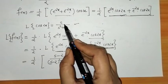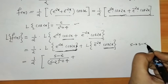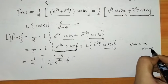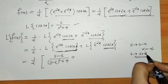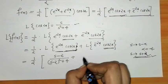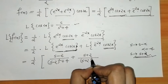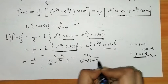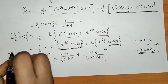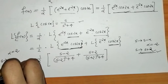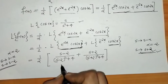For the second term with cos(2x), we replace s by s minus α where α equals minus 2, so we get s plus 2. This gives us (s+2) divided by (s+2)² plus 4. So the first term used α equals 2 with s replaced by s minus 2, and the second used α equals minus 2 with s replaced by s plus 2.